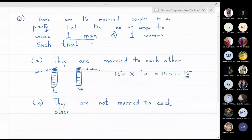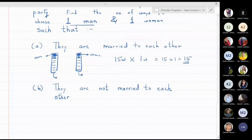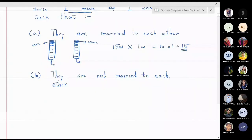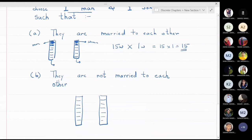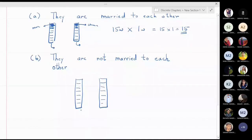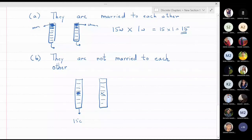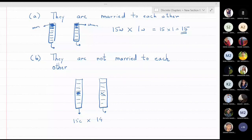Part two: choose one man and one woman such that they are NOT married to each other. There are 15 choices for a man, but once a man is chosen, his wife cannot be selected. So there are only 14 choices for the woman. The total number of ways is 15 × 14, which equals 210.